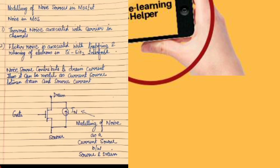Noise is a type of unwanted signal that actually attenuates or reduces the strength of a signal. In the similar manner, if we talk about working in the MOSFET conditions, the MOSFET is also affected by the noise. There are two types of noise in the circuit that affect the MOSFET.